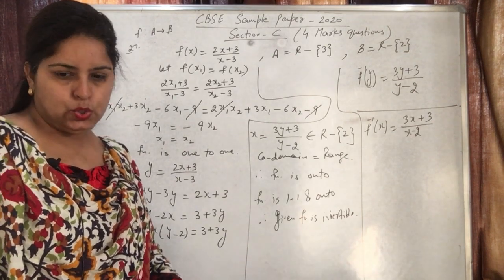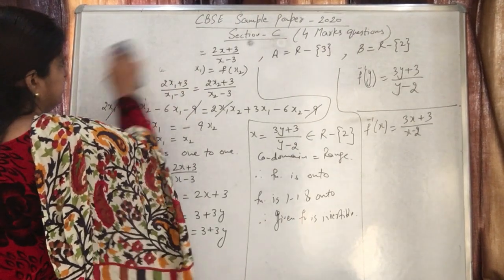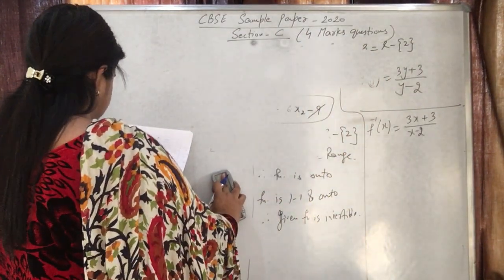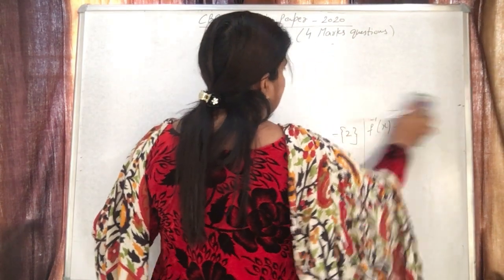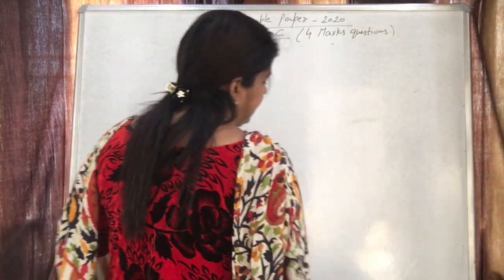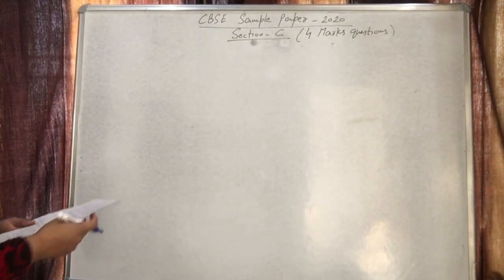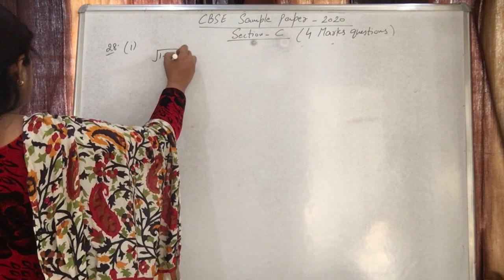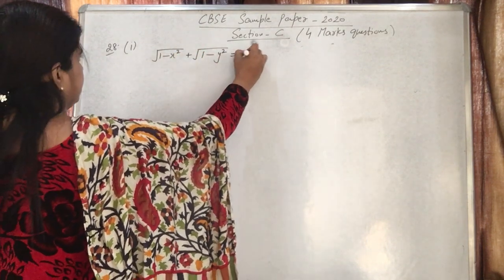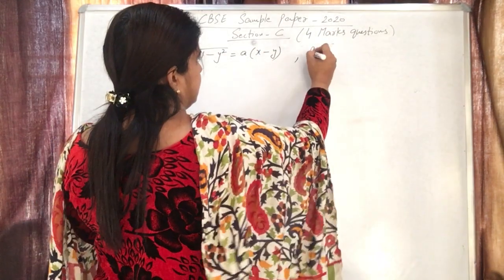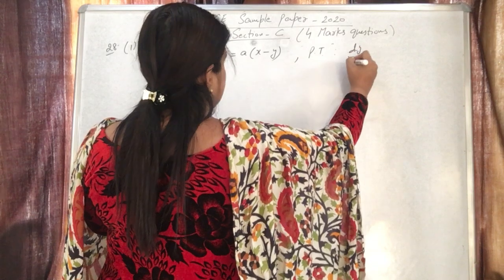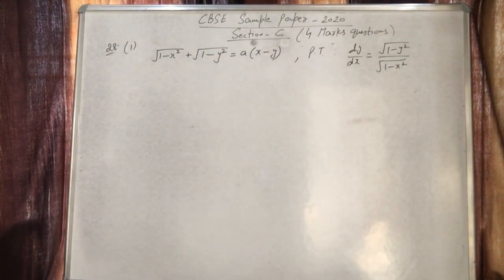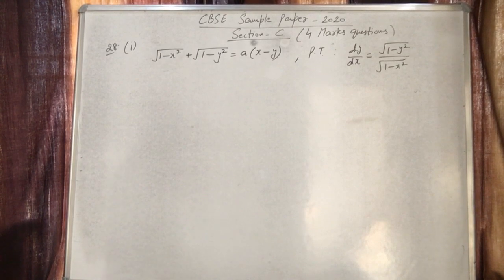Question number 28 has two parts — it is an option question. The first part: if √(1-x²) + √(1-y²) = a(x-y), then prove that dy/dx = √(1-y²)/√(1-x²).